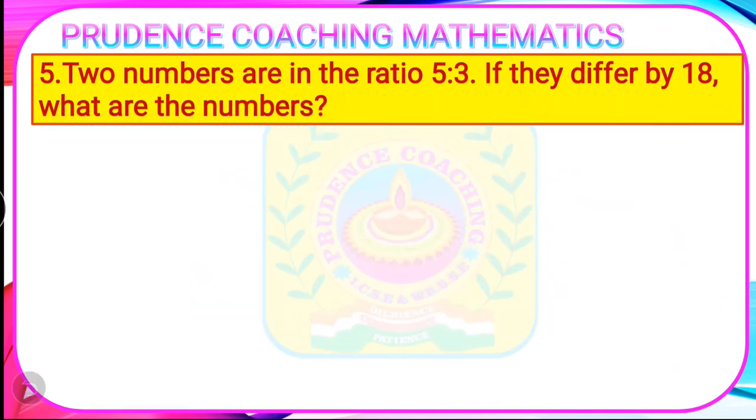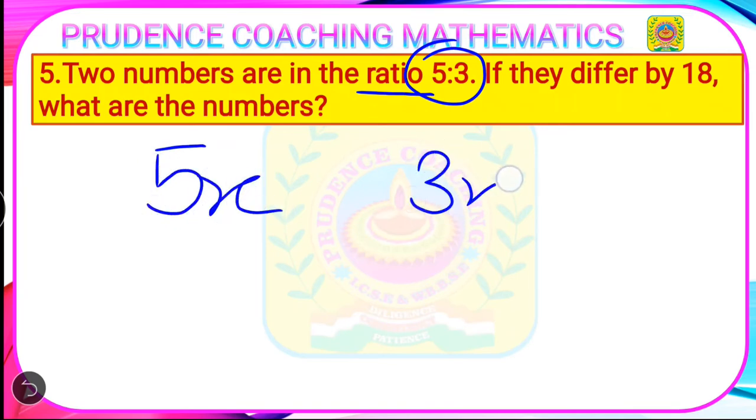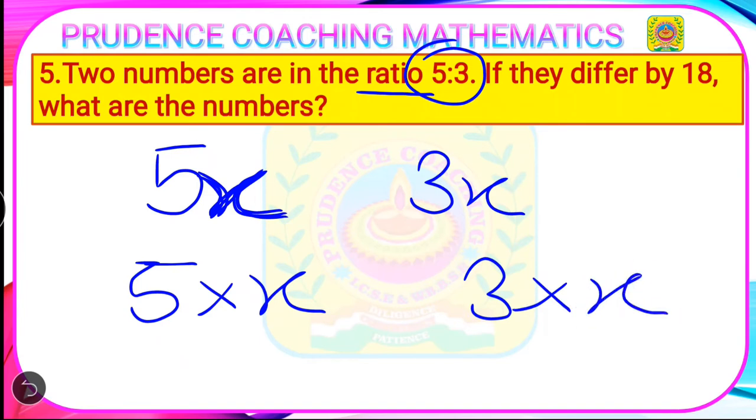Now we will start solving the question. So here the ratio of the numbers are given. These are not the original numbers. So original numbers you will assume as 5x and 3x. So these are the original numbers. We are assuming x because x is the highest common factor. With which, if we multiply 5, we will get back the original number. If we multiply x into 3, then we will get back the original number.